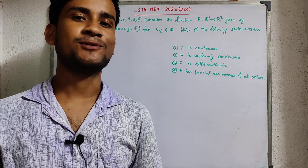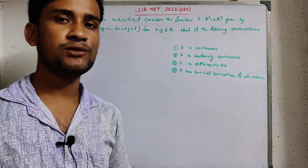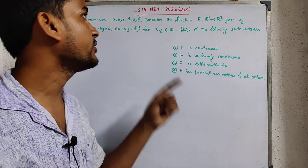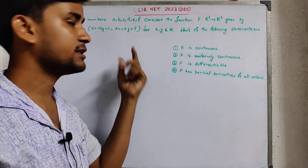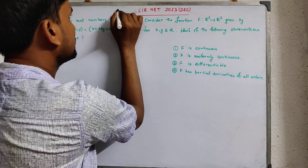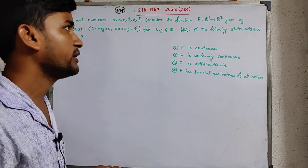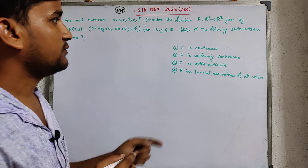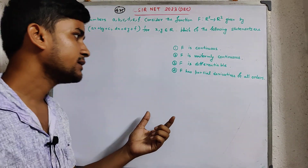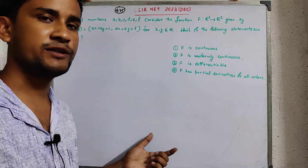Hi everyone, welcome back to my channel, welcome back to The Learning Field. In this video we are going to solve questions of CSIR-NET December 2023. This is a question from Real Analysis — specifically a 4.75 marks question from Part C of CSIR-NET December 2023. This question is based on uniform continuity, differentiability, and continuity.